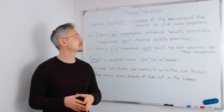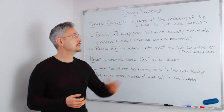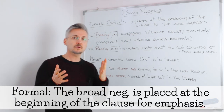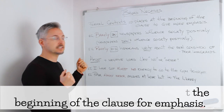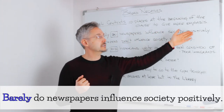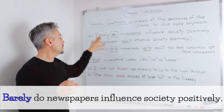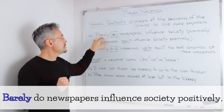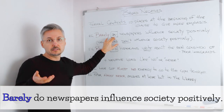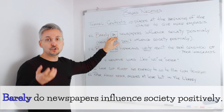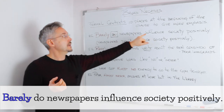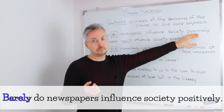In formal contexts, the broad negative is placed at the beginning of the clause to give more emphasis. Let's look at my introductory example: barely do newspapers influence society positively. So we have 'barely' — remember that after 'barely' we need the auxiliary of the sentence. In this case we have 'do'. So: barely do newspapers — verb — influence society positively.